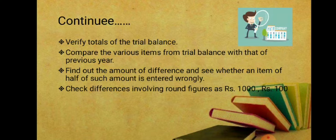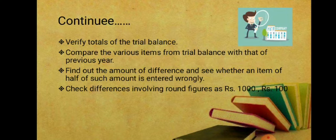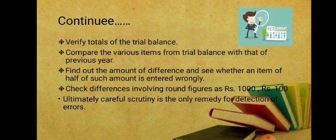The auditor should also check differences involving round figures such as 1,000 and 100. When auditing, figures like 1,000, 2,000, or 200 deserve special attention. Round figures need to be carefully examined as they are more likely to contain errors or mistakes.